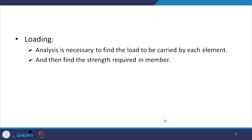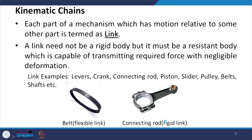Each part of a mechanism that has motion relative to some other part is termed a link. A link need not be a rigid body but must be a resistant body capable of transmitting the required force with negligible deformation. Examples include levers, crank, connecting rod, piston, slider, pulley, belt, and shaft.